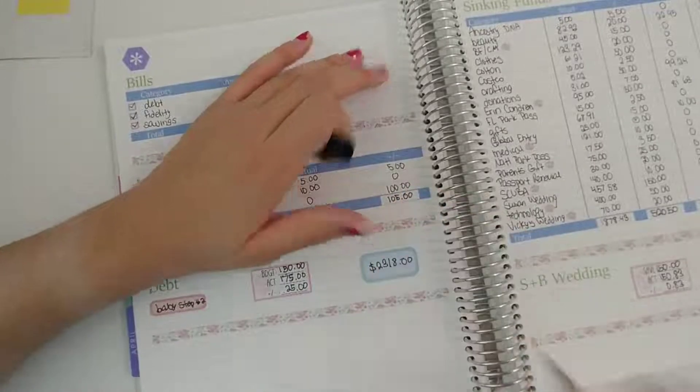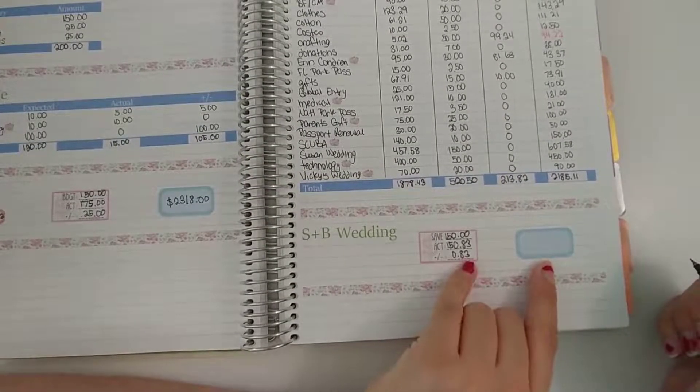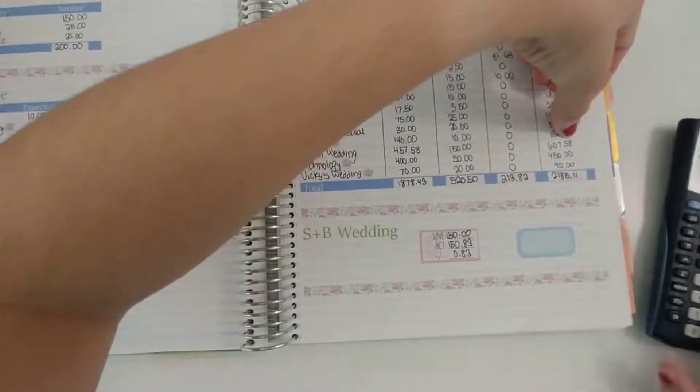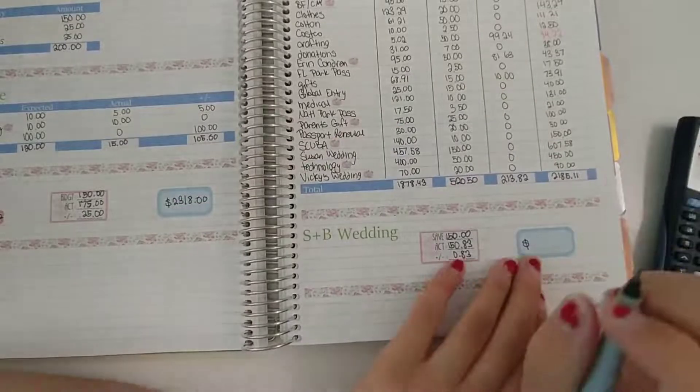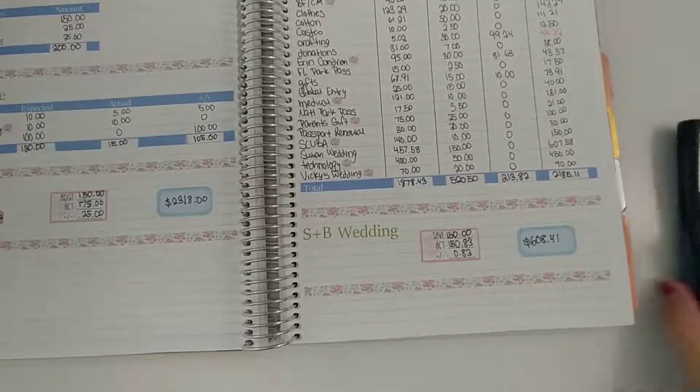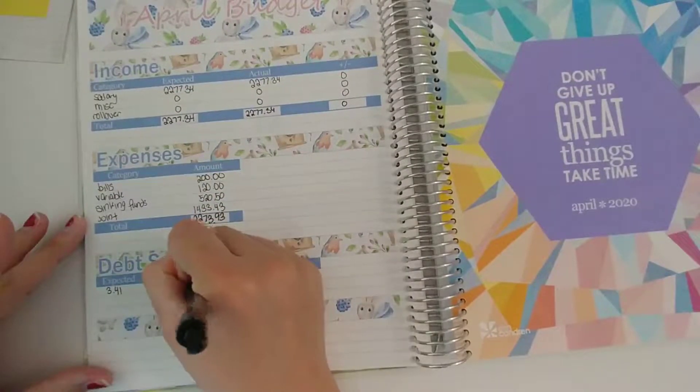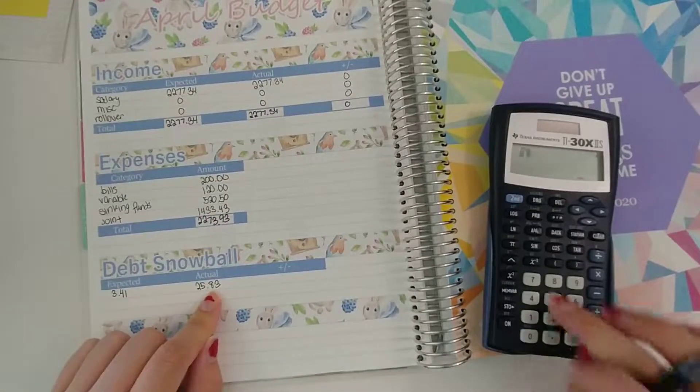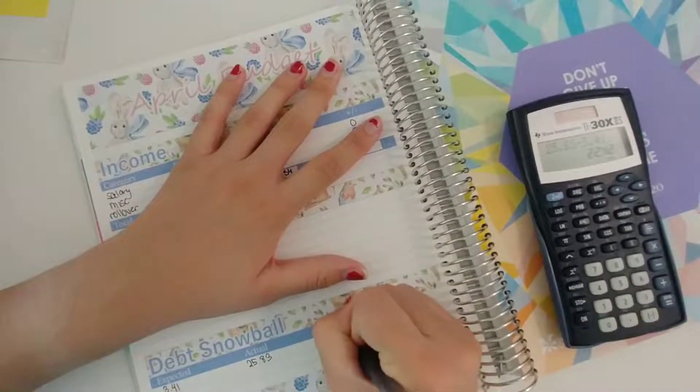So we're getting down to the bottom there and then for Susan and Brandon's wedding since I gave an extra $0.83, I have $607.58 plus $0.83 so now I have $608.41 saved up for that. So even if I was only to put $0.83 towards that, $0.83 is $0.83 so I'm really happy about that. So the total that I was able to put towards that snowball was $25.83. So I was able to put an additional $22.42 towards my savings which is really exciting.